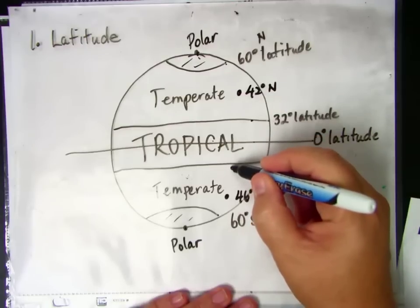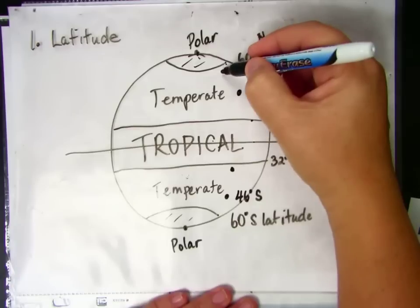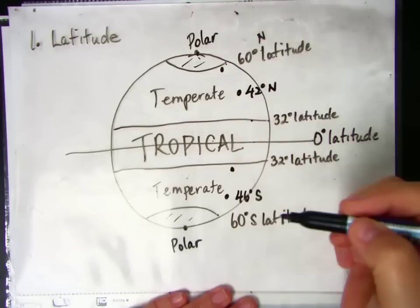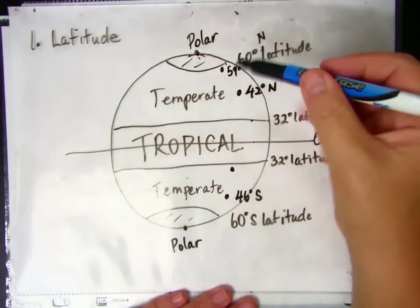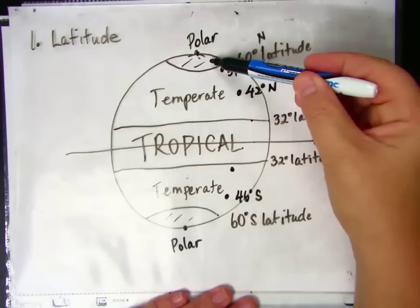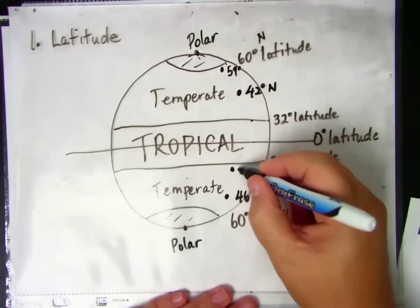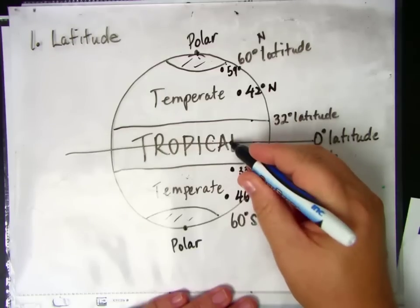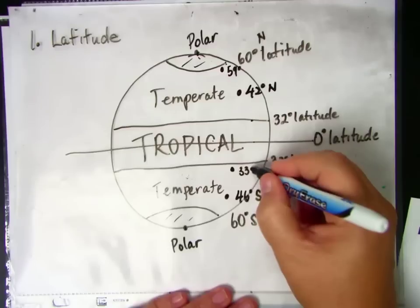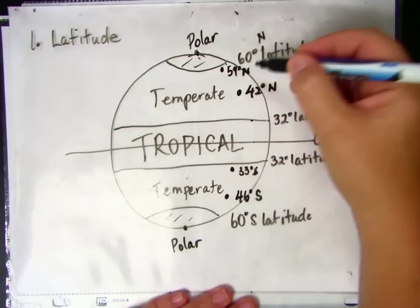Someone at 33 degrees south latitude and someone at 59 degrees north latitude would have different climates. Because this climate is almost a polar climate. It's quite close. And this one is almost a tropical climate because it's quite close to the equator. This is south latitude and this is north latitude.